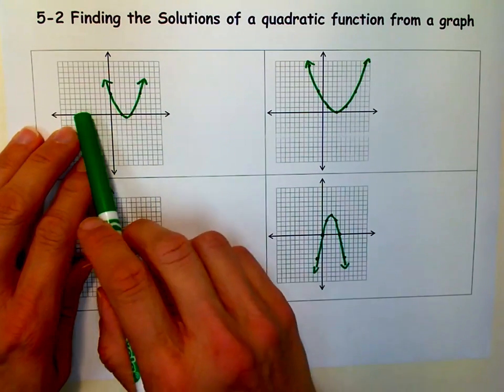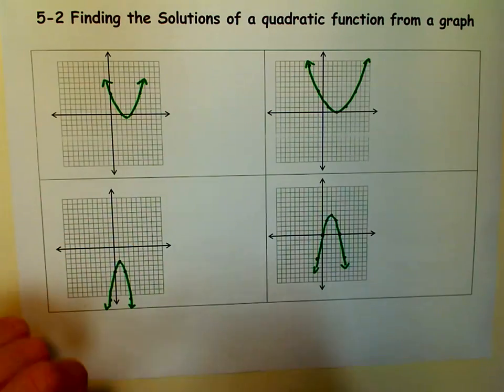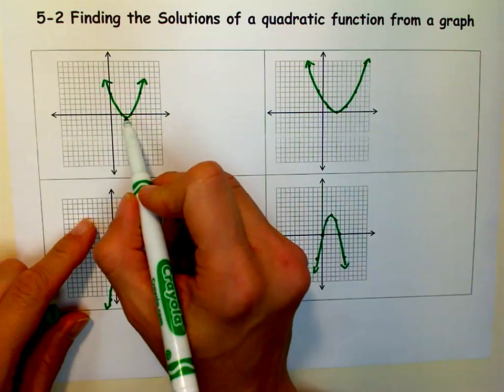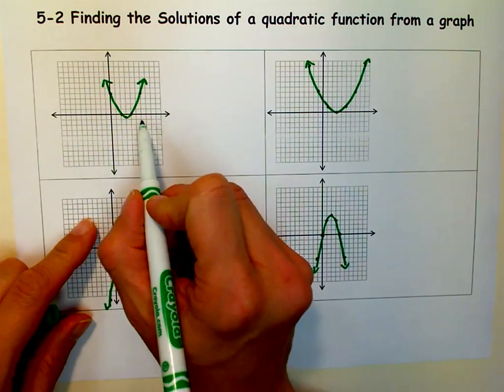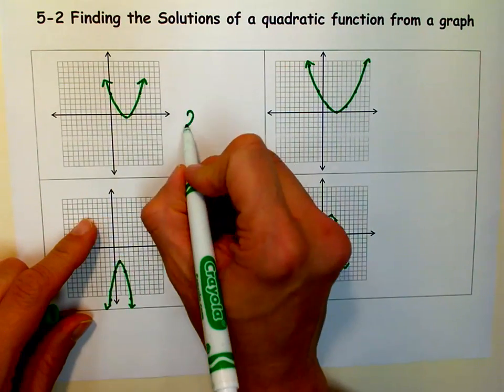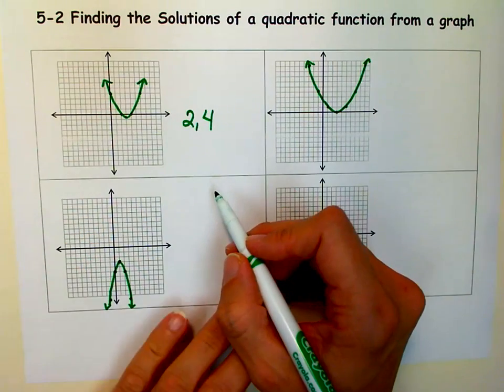So if you're given a graph and you're trying to find the solutions, you just look at the x-axis and figure out where the parabola, where the graph, is crossing the x-axis. So if we look here, it crosses at 2 and at 4, so our solutions are 2 and 4.